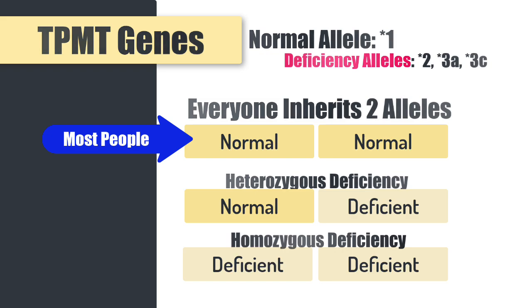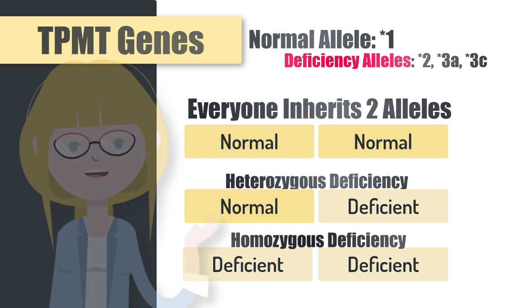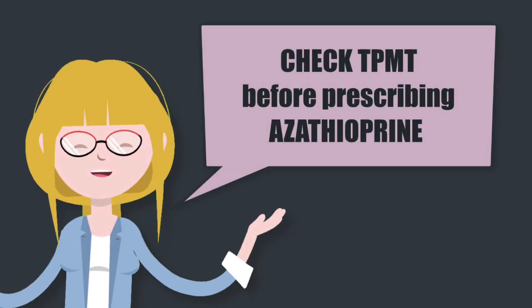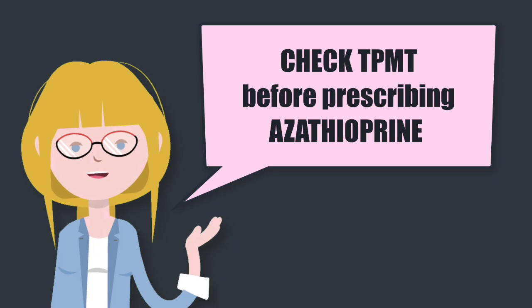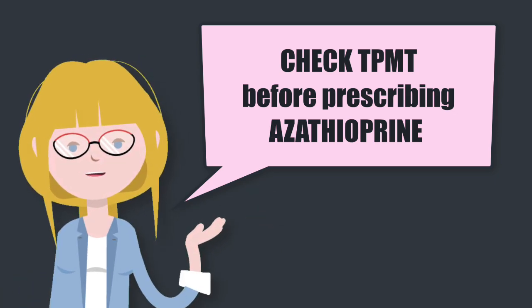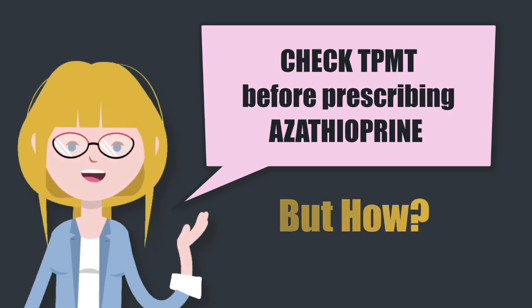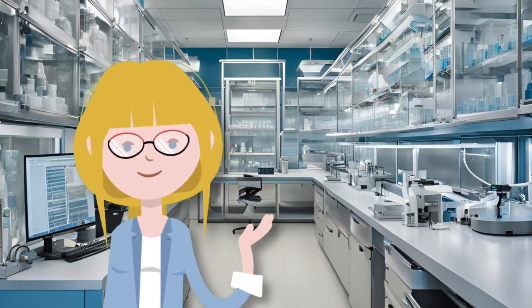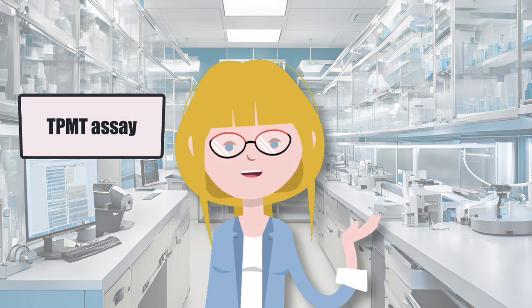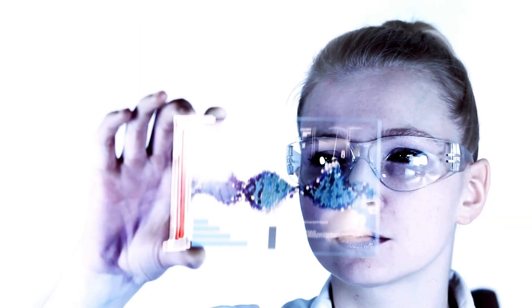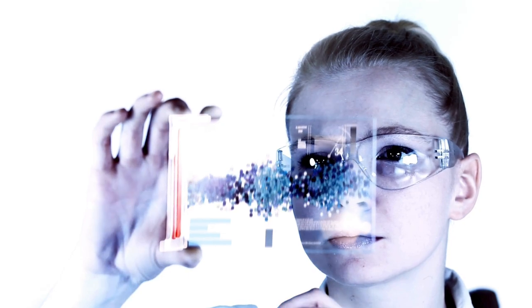Whilst statistically most people are likely to tolerate azathioprine just fine, the risk is real for those who do have TPMT deficiency. So if it's within your power to check for TPMT deficiency before you prescribe azathioprine or 6-MP, that's the best thing to do. There are two ways to test: a TPMT assay, which checks the functional level of the enzyme inside red cells, and there's genetic testing. Here in Australia, genetic testing for TPMT genes is Medicare reimbursed, so we have easy access to it and genetic testing is therefore favoured.